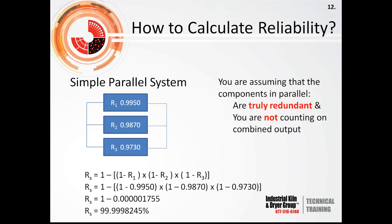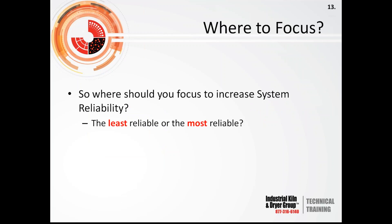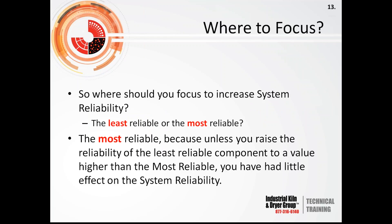You are assuming that components in parallel are truly redundant — you're not counting on combined output. If you have two units working together, they are more in a series-type design than a parallel-type design, and you must consider them as series. In a parallel system, where would you focus to increase reliability? You focus on the most reliable component, because unless you raise the least reliable component's reliability above the most reliable, you will have little effect on overall system reliability.